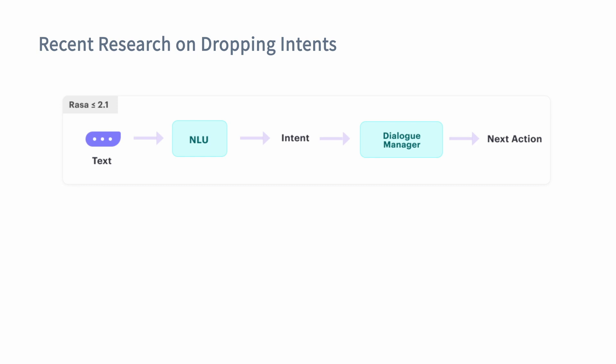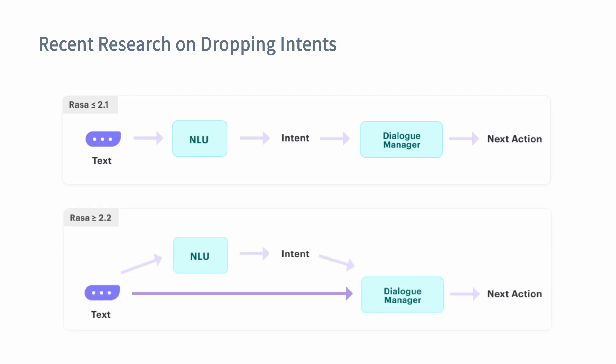Before Rasa 2.1, the way to make a prediction for a next action was to take the text, predict the intent in the text, and then give that intent prediction to the dialogue manager, which would use that knowledge to predict the next action. As of Rasa 2.2, you are now also able to use text features as input for the dialogue manager directly. All the featurization steps happening inside the NLU pipeline are now also numeric features being passed to the dialogue manager. This way, the dialogue manager is able to use not just intent predictions, but also features specific to the current utterance.